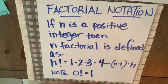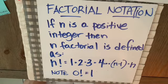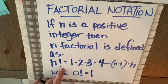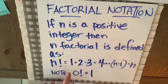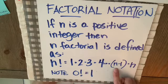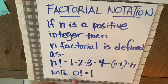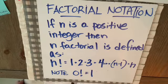Let's now talk about factorial notation. If n is a positive integer, then n factorial — written with an exclamation mark — is defined as 1 times 2 times 3 times 4, all the way up to n minus 1 times n. Note: 0 factorial is defined as 1.